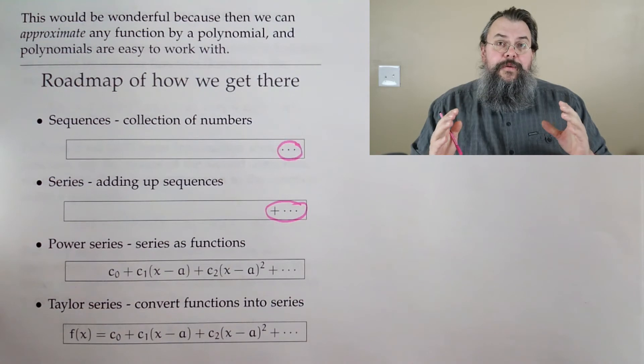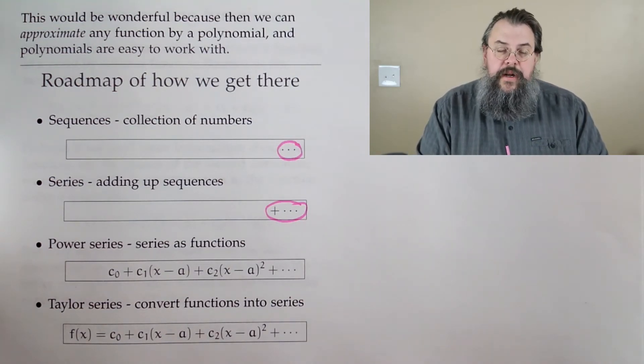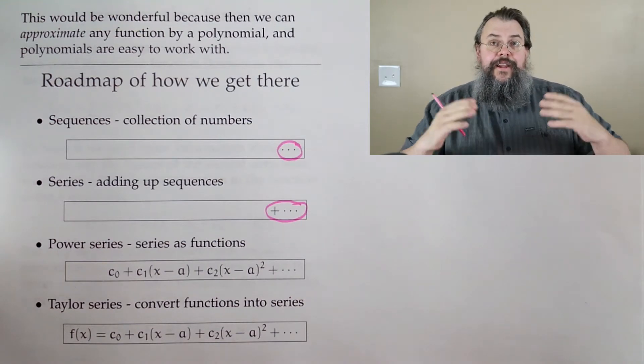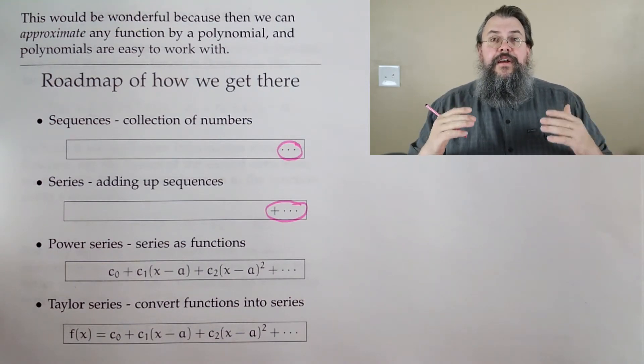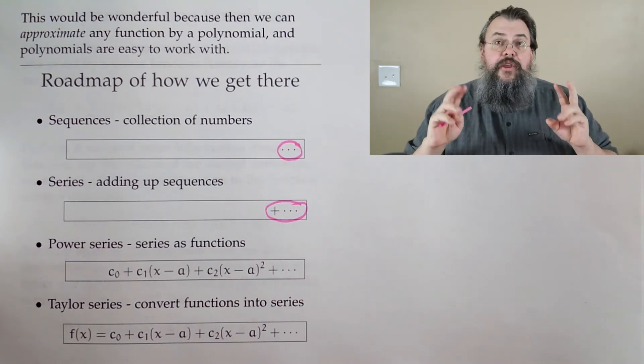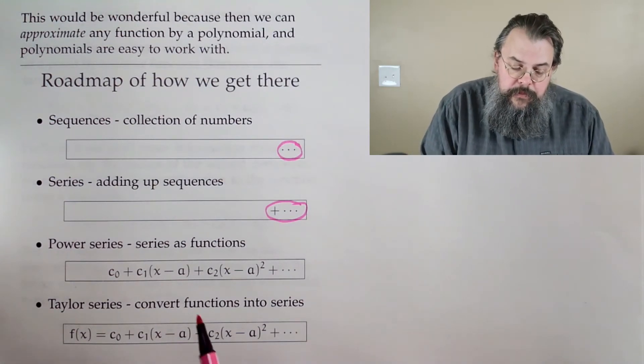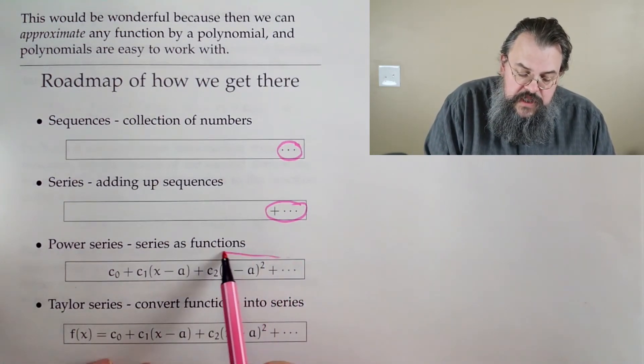But with limits, what we can say is this is what it would be if you were able to do it. So that's where we're going. We're going to say, okay, how do we say what should be the sum when we add up infinitely many things? All right, now that we can add infinitely many things, we start saying, okay, so the next thing is to talk about the things that we're adding up are essentially polynomials.